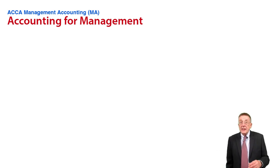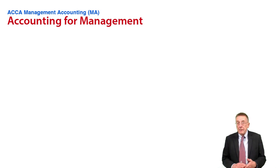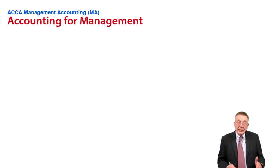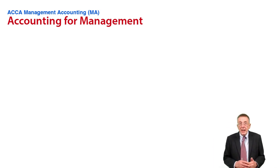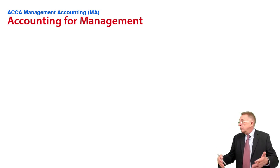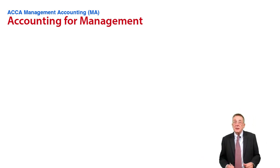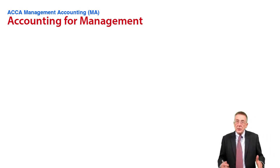Chapter one, Accountable Management, is very much an introductory chapter explaining basically what the management accountants are doing. The job of the management accountant is to help management run the business, to help them improve the business. Management have to make lots of decisions — they have to decide what selling price to charge for whatever we're producing. It's up to the management accountant to give them the information they need to help them make those decisions.